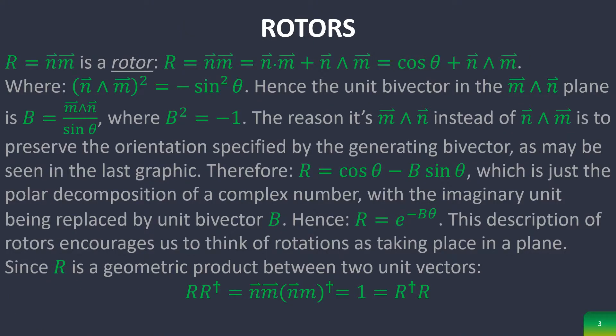This is actually called a rotor which is defined by this equation. Hence a unit bivector in the plane created by the unit vectors M and N is B of the bivector M∧N over sine θ.